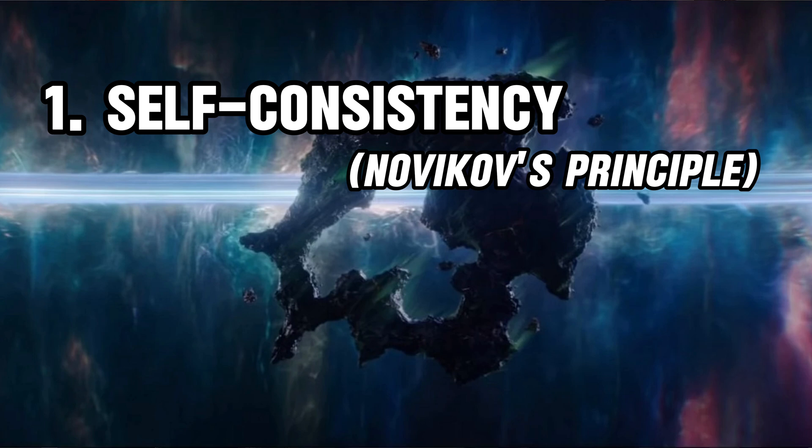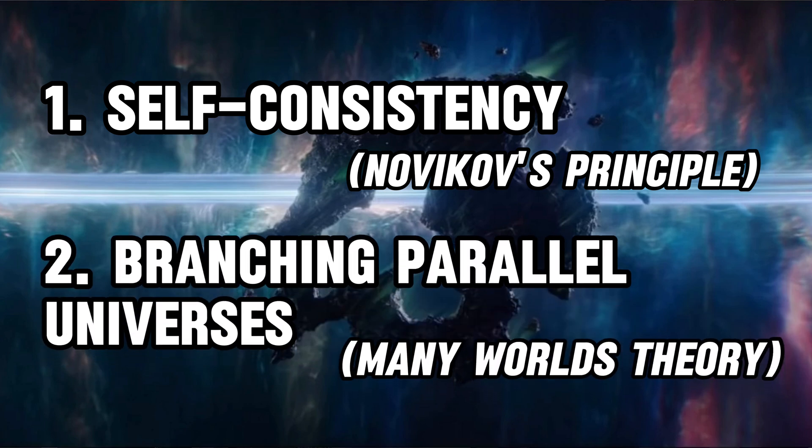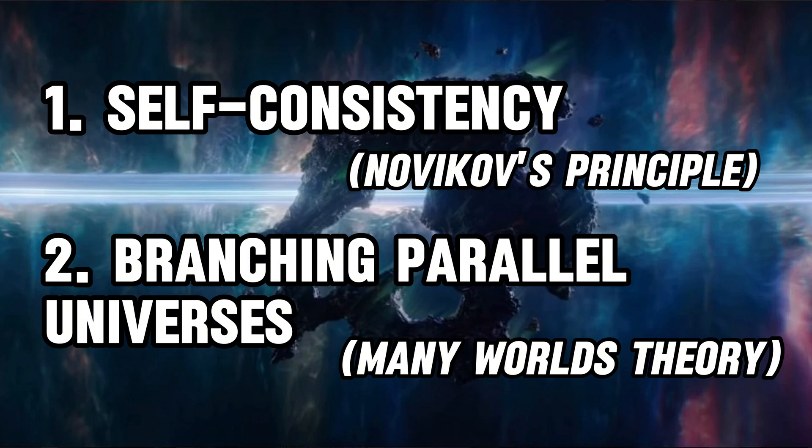Deutsch proposed that the quantum system could evolve into a superposition of states that are all self-consistent. In the case of the grandfather paradox, the quantum system could exist in a superposition where the time traveler both does and does not kill their grandfather. The self-consistency condition would ensure that the outcome is always consistent with the traveler's past. In this interpretation, every quantum event results in the branching of the universe into a set of parallel universes, each representing a different outcome. By traveling along a loop and creating a superposition of states, one of two things can happen: either everything is self-consistent and you leave the loop without having changed anything, or any changes made lead to new branches, so the world you emerge into is not the one you left.